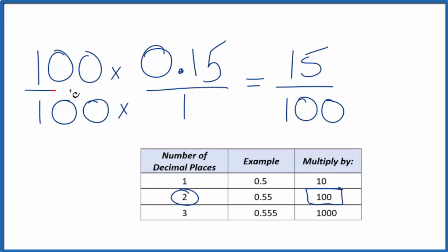Think of it this way. 100 over 100, that's the same as just 1. So really, we just multiply this by 1, and that didn't change the actual value, just the way it's written.